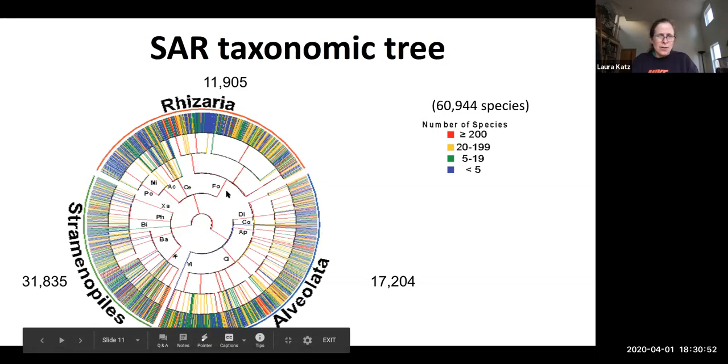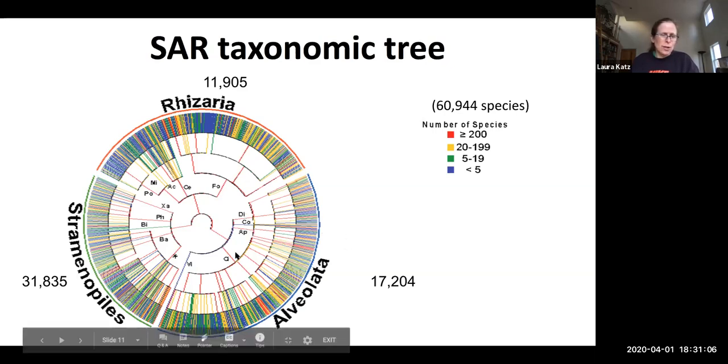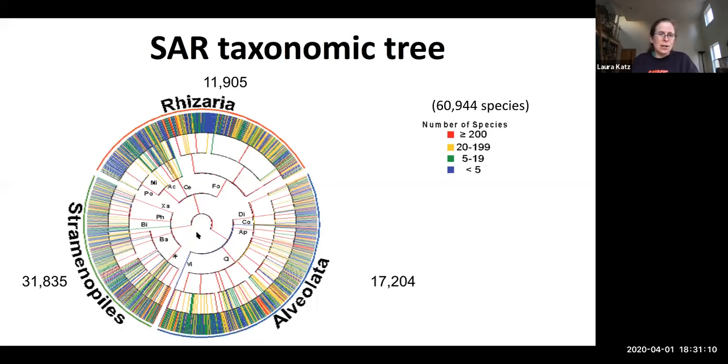Interestingly, FO, these are the forams. Look how many forams there are. We'll return to these in a later lecture. These guys have a fossil record, which might be why there's so many binomial names. Dinoflagellates, this is AP complexans where malaria is. We'll return to these. Ciliates, the most beloved group. Here are the diatoms that I'll talk about today, BA for bacillariophyta. So anyway, this is what we did. We said, no, actually, those 61,000 binomially named SAR, that's a lot.